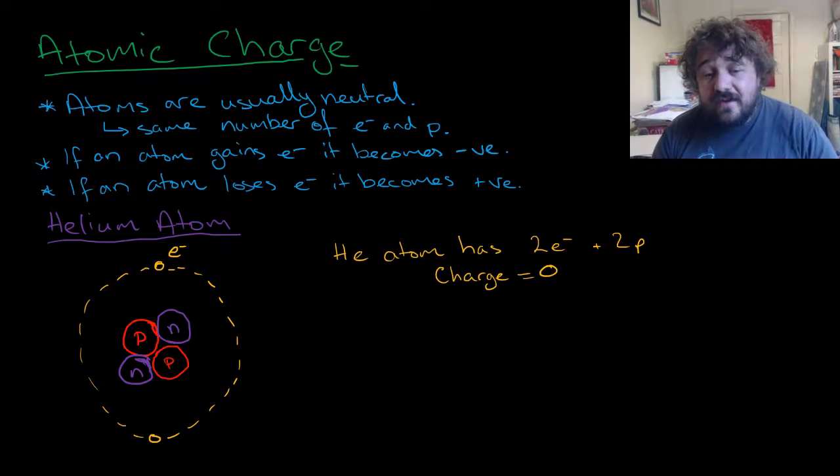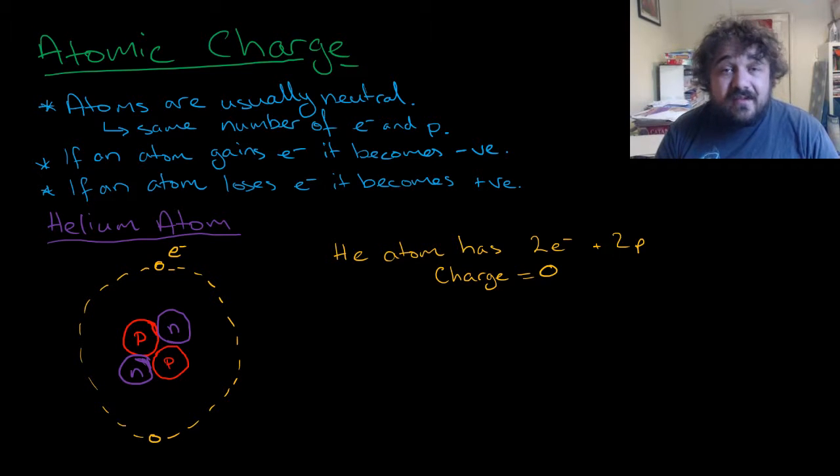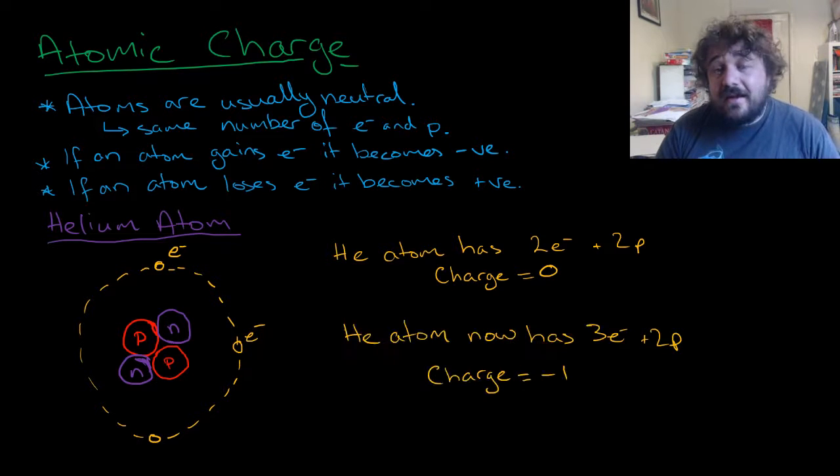Now, we'll just have this so it's written down. The helium atom, He is the helium, has two electrons, so 2e-, and two protons, so 2p+, and its charge is 0. If we add a charge, add a negative, it now has three electrons, two protons, the charge is minus 1.